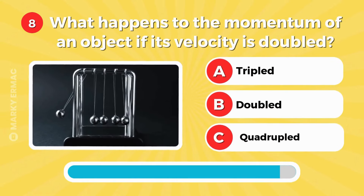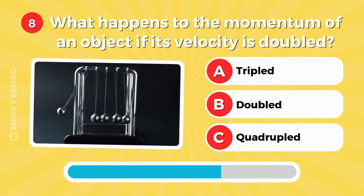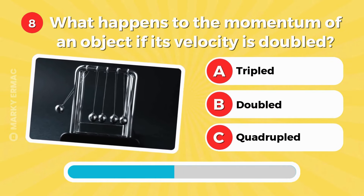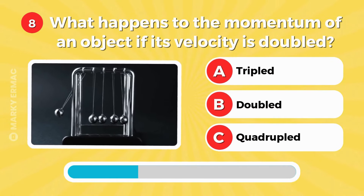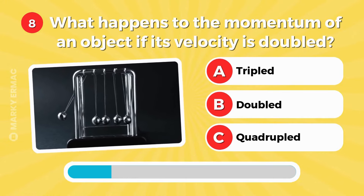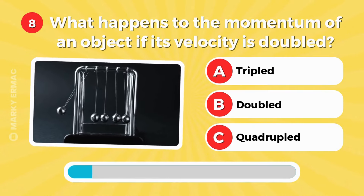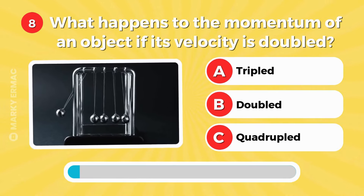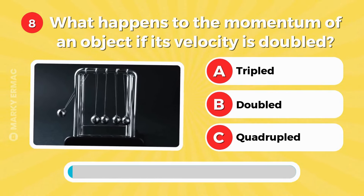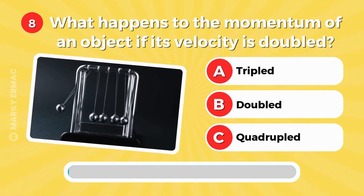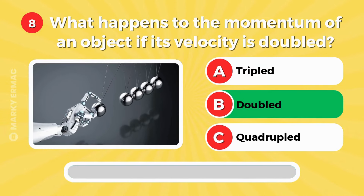What happens to the momentum of an object if its velocity is doubled? Tripled, doubled, or quadrupled? Letter B — doubled.